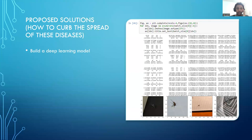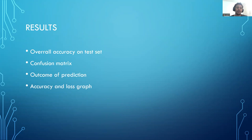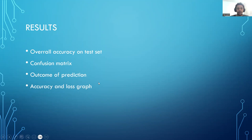For the results, we're going to look at the accuracy on the test set, check the confusion matrix, check the prediction of the outcome, and get to see the accuracy and loss graph.